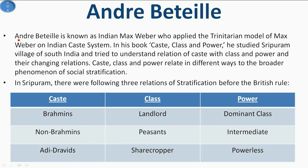André Béteille is basically also known as the Indian Max Weber because he applied the concept of the Trinitarian model of Max Weber on the Indian caste system. The Trinitarian model of Max Weber says that there are three things in social stratification: caste, status group, and parties. In his book 'Caste, Class and Power', caste refers to the status group, class refers to economic stratification, and the third dimension is party, that is power.